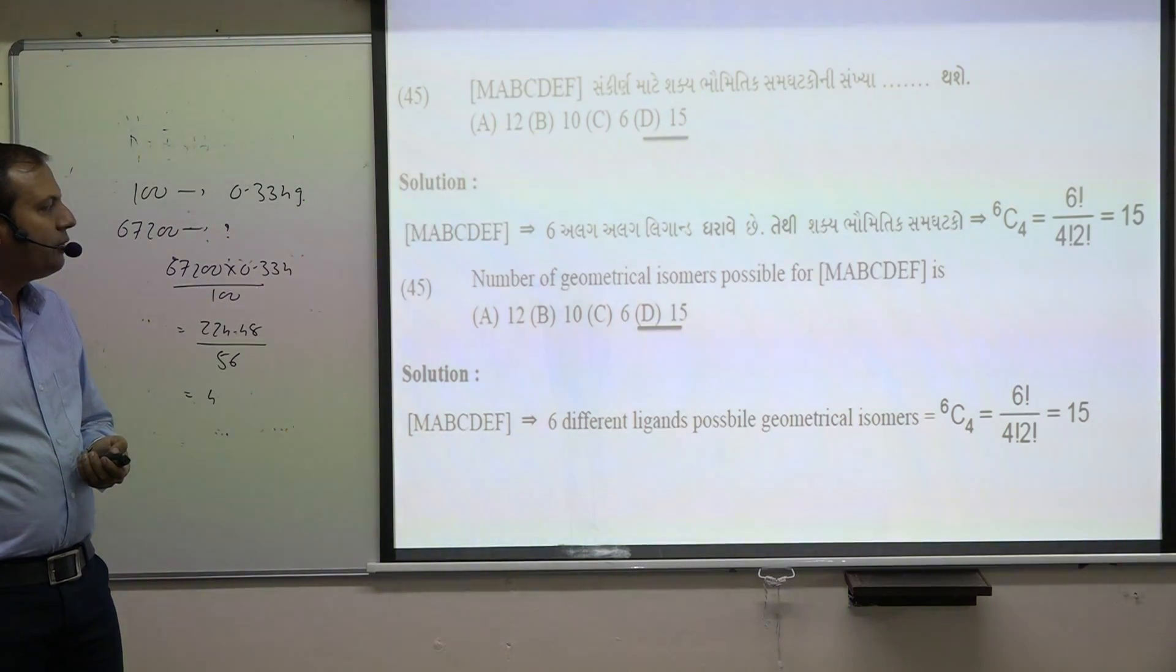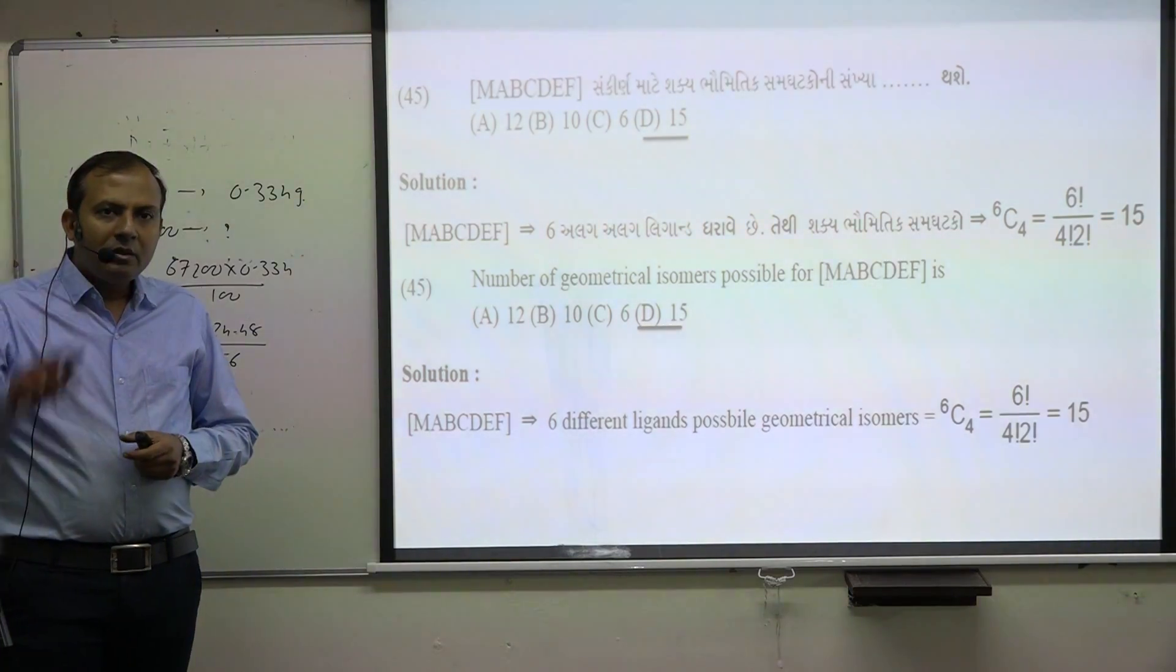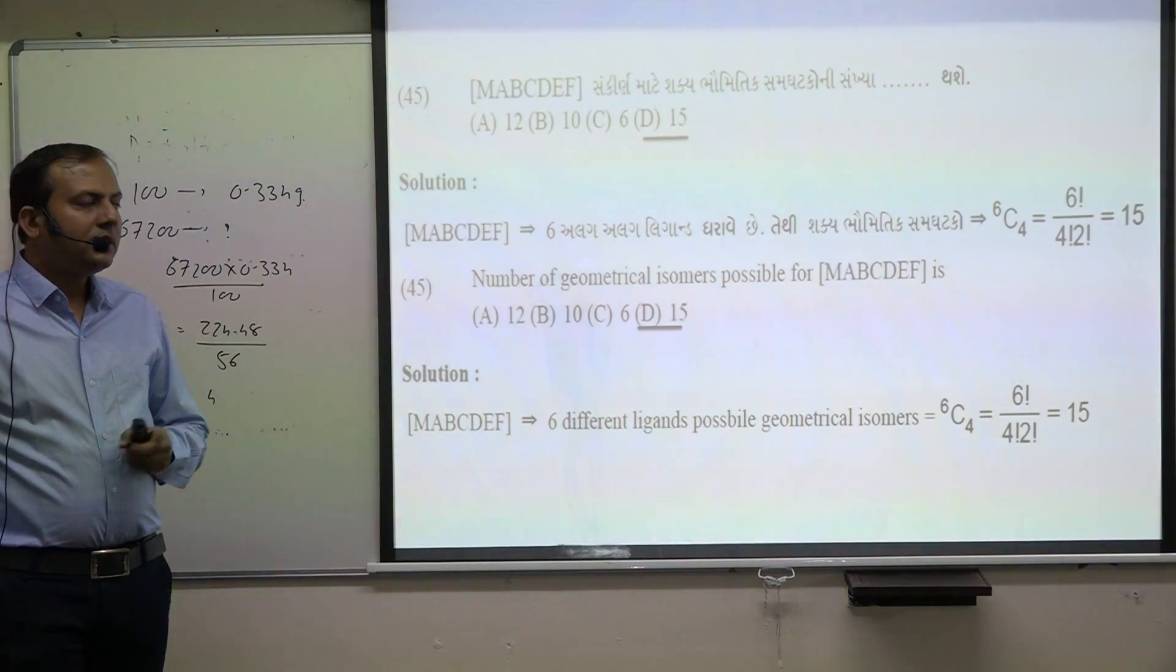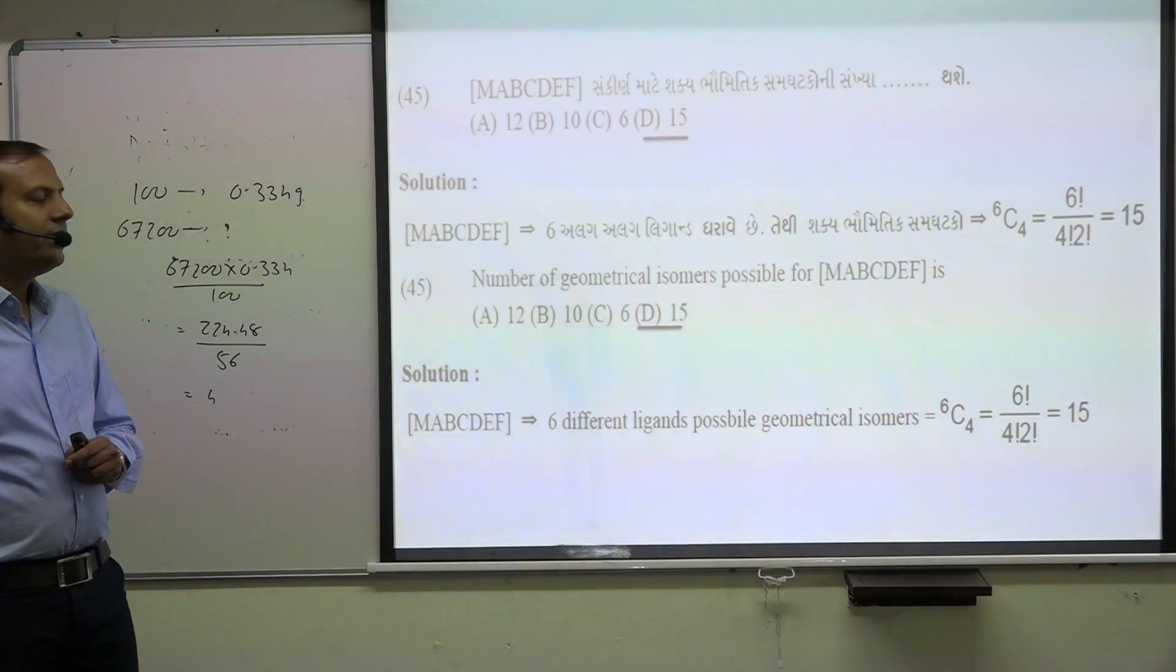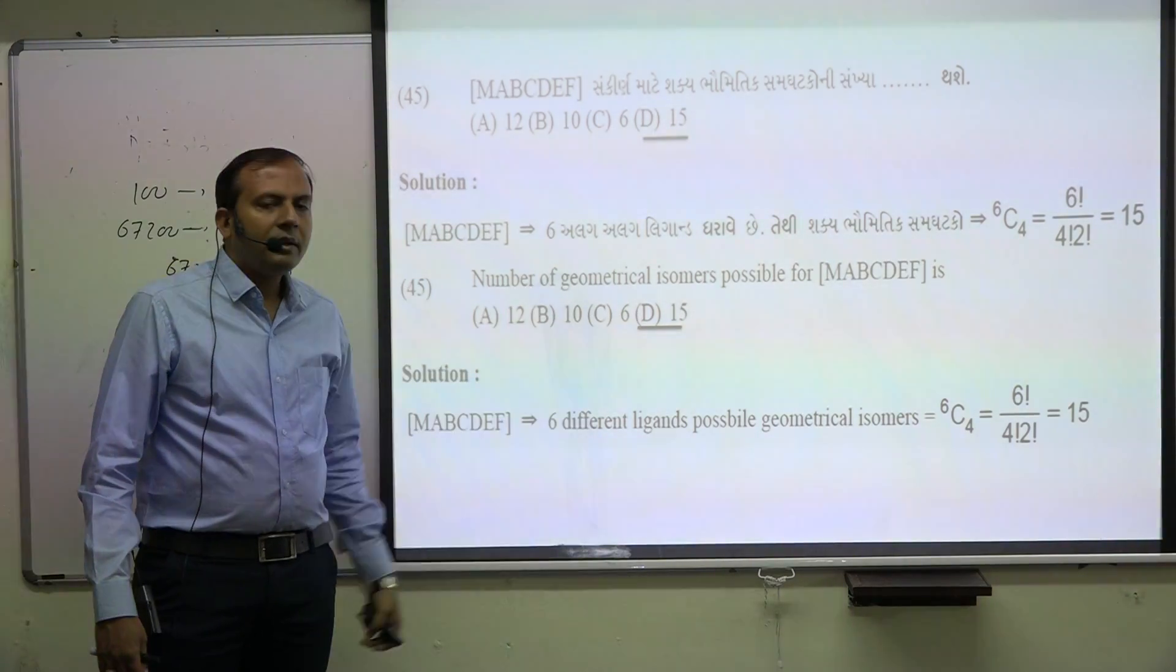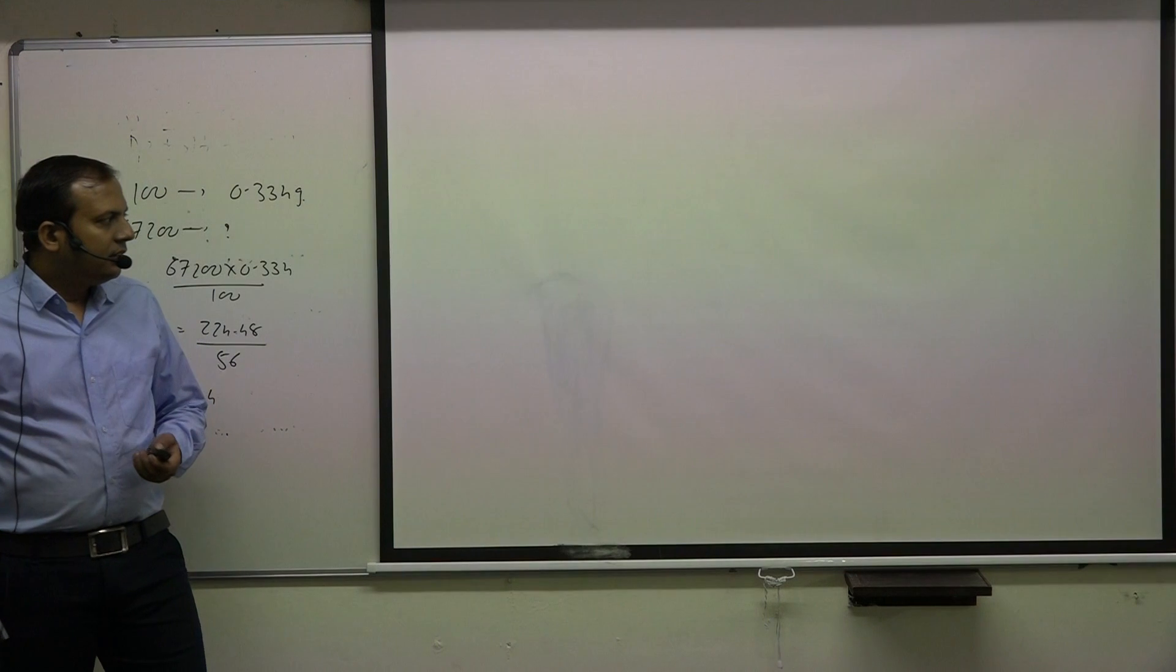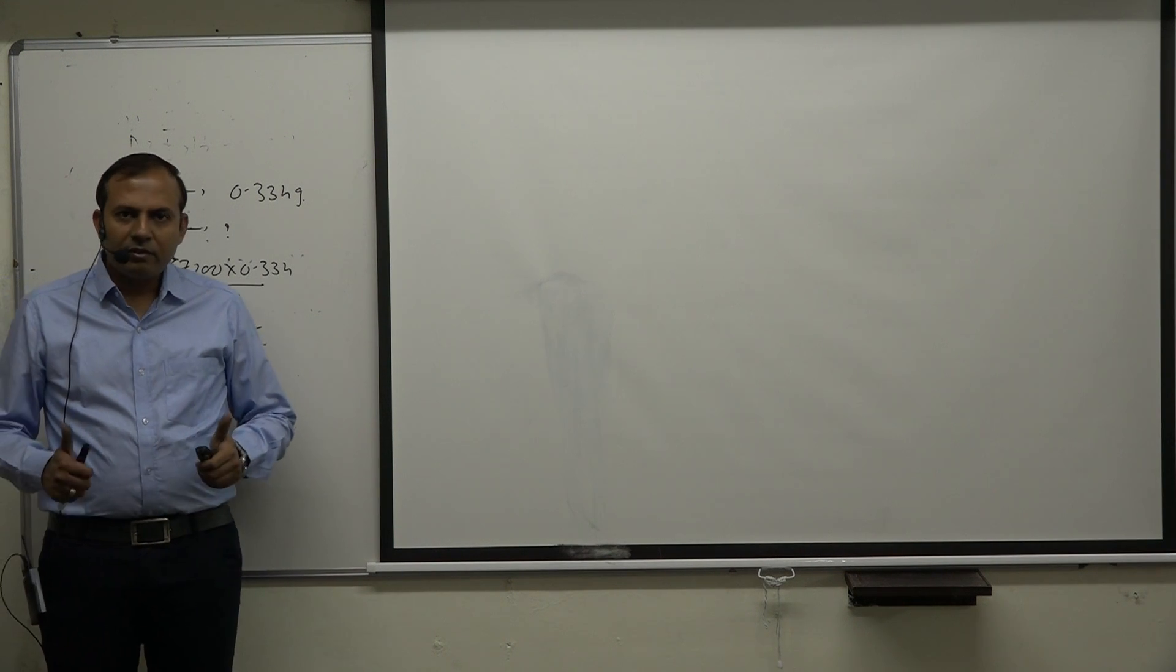The number of geometrical isomers possible for MABCDEF: all six ligands are different, so the number of possible isomers is 15. Okay, thank you very much, best of luck.